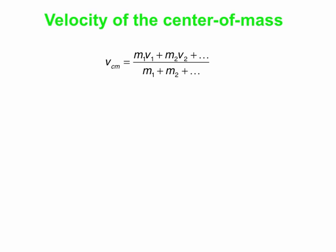Now let's turn to the velocity of the center of mass. You can write down an equation for the velocity of the center of mass, which is very similar to the one that gives us the position. By the way, for XCM, if you're in two dimensions, there's a comparable one for YCM — the Y-coordinate of the center of mass. That would be YCM = M1*Y1 + M2*Y2, et cetera, over the total mass.